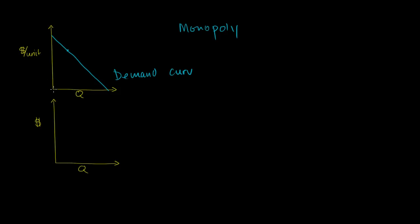If I don't produce anything and my quantity is 0, how much total revenue am I going to get regardless of what the price is? Well, I'm not going to get any total revenue — it's going to be 0. And if my quantity is way out here, I'm selling a lot but selling it for free, so once again I have no total revenue. Starting from zero, each incremental unit adds more and more total revenue until some maximum point, and then it gets less and less. So the total revenue graph looks something like that — that is total revenue, often abbreviated TR.